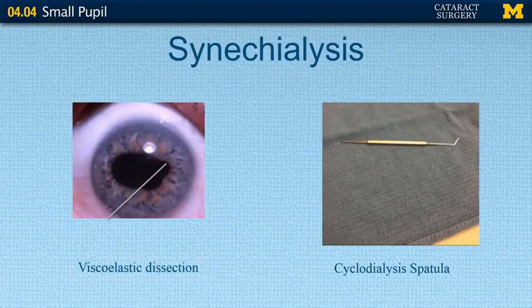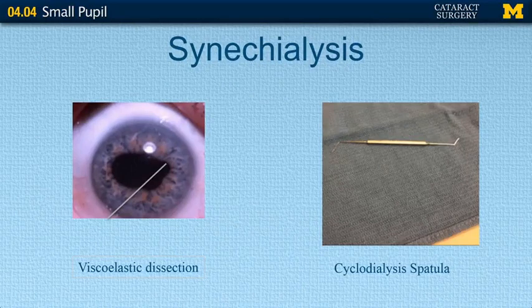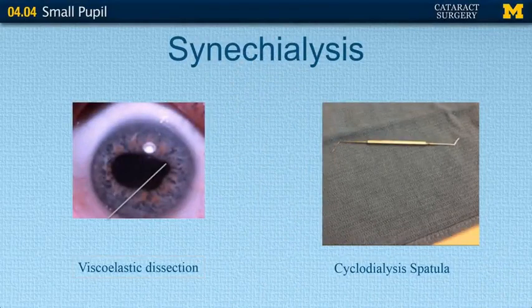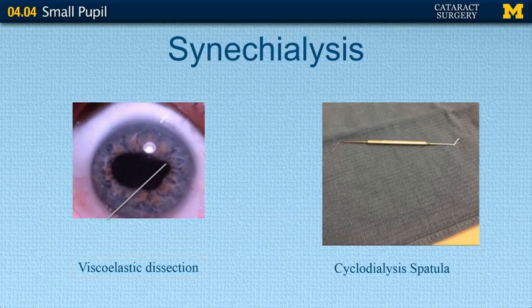The first mechanism to start with would be synechialysis, typically done in cases of posterior synechiae — when the iris tissue is adherent to the lens. Two ways to manage this: one is viscoelastic dissection, where you take your viscoelastic cannula and find an area where the iris is not adherent, insert the cannula underneath the iris tissue, and inject — the viscoelastic helps pull off the iris from the anterior lens. The other option is a cyclodialysis spatula, where you physically remove the adhesion.